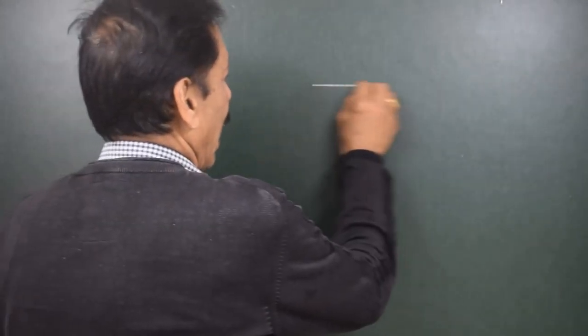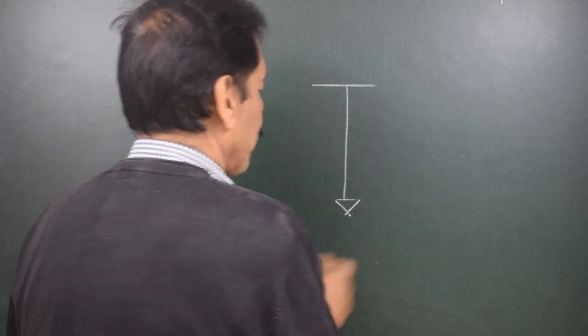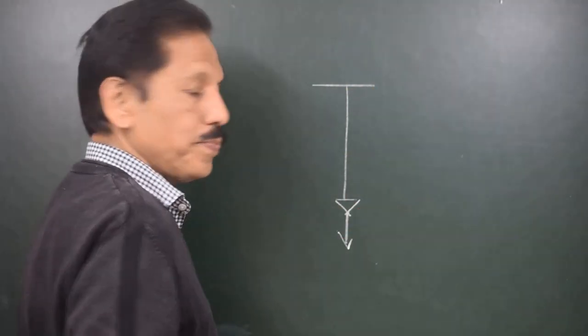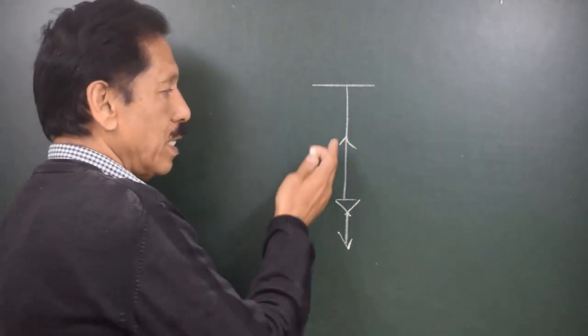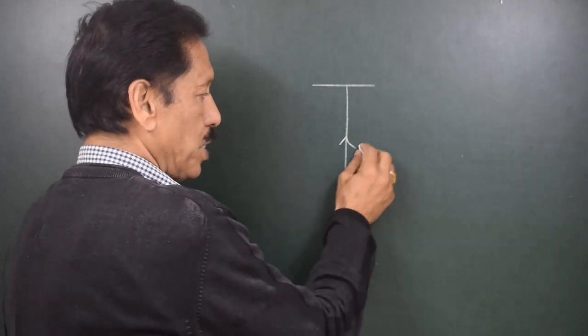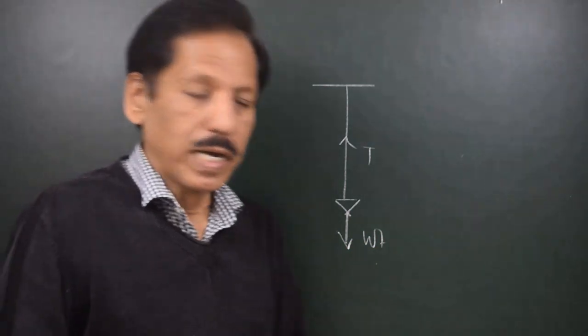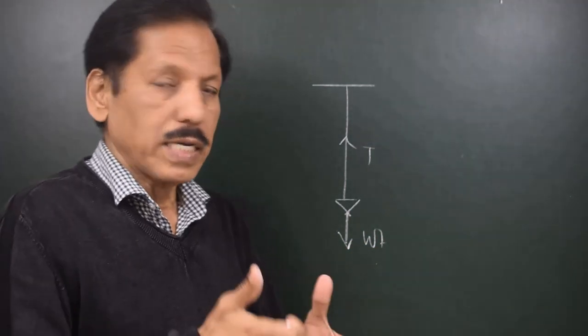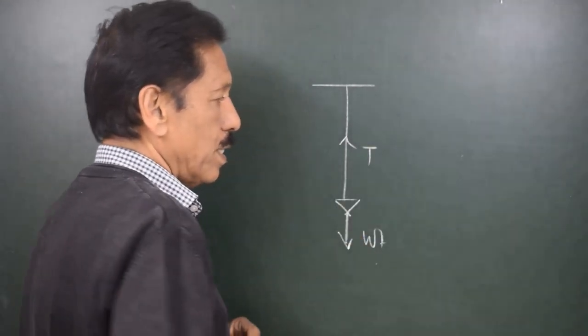Before we discuss about SF, let us understand what is tension and what is compression. Suppose we hang a weight by a piano wire — this weight acts in the downward direction and there is tension felt in the piano wire in the upward direction. This tension force and the weight force are acting in one line, equal and opposite. This is the example of understanding tension.